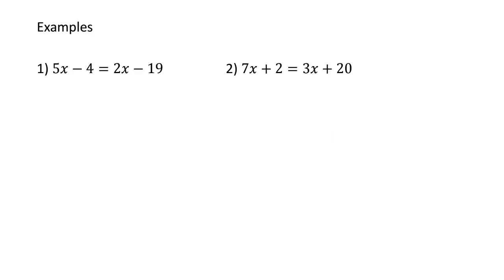So let's have a look at some examples. For the first one, we've got 5x subtract 4 equals 2x subtract 19. One thing to be careful of: negative numbers can come into equations, so make sure that you are nice and confident with them, otherwise that could cause a hiccup.